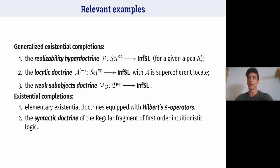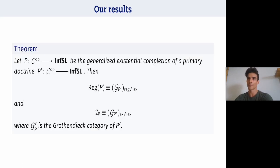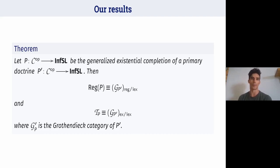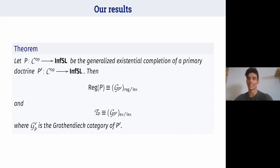I want to state two theorems useful for the applications. The first: if we consider a doctrine P which is the generalized existential completion of a primary doctrine P prime, then the regular completion of P is equivalent to the regular completion of the Grothendieck category of P prime, and the triples-to-topos construction is equivalent to the exact completion of the Grothendieck category of P prime.